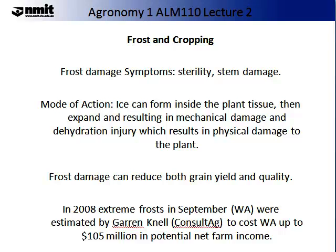Stem damage is commonly seen with frost damage. The mode of action for frost damage is usually that ice forms inside the plant tissue. As the temperature after the frost rises, this ice will expand, resulting in mechanical damage and dehydration injury, which will then result in physical damage to the plant and loss of cells. Frost damage can reduce both grain yield and quality. In 2008, extreme frosts in September in Western Australia were estimated by Garen Knell, a consultant in agriculture, to cost Western Australia up to $105 million in potential net farm income. Therefore, you can see first-hand the severity of this particular climate input.